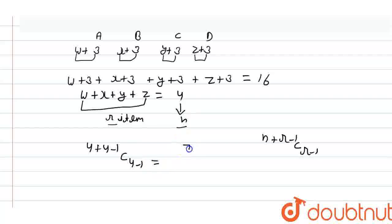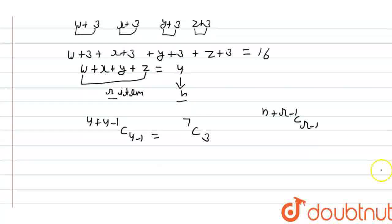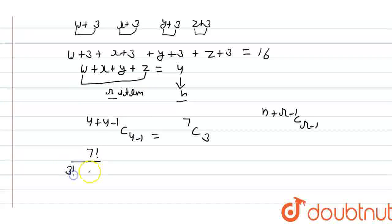So from here, we will get 7 C 3. We can write this as factorial 7 upon factorial 3 into factorial 4, which equals 7 into 6 into 5 into factorial 4.